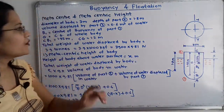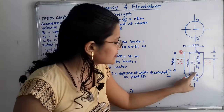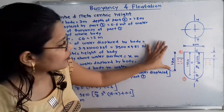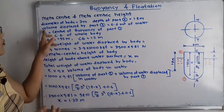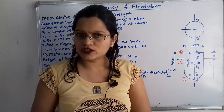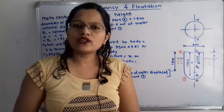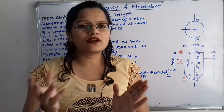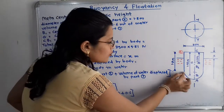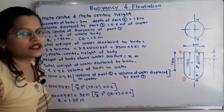The diameter of the body is 3 meter. The depth of part 2 (cylindrical portion) is 1.8 meter — shown from the top of the cylinder down to the center. The volume displaced by part 1 is 0.6 meter cube. Since a body displaces a volume of water equal to its own volume, the volume of body part 1 is also 0.6 meter cube.